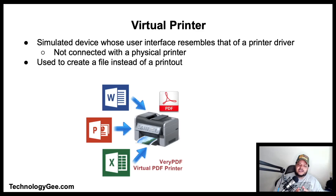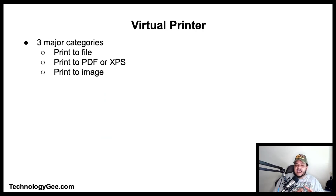A virtual printer is a simulated device whose user interface resembles that of a printer driver but is not connected to a physical printer; it is used to create a file instead of a printout. There are three major categories: print to file, used to create a file that can be copied to a specific printer for output; print to PDF or XPS (Microsoft XPS), used to save files that cannot be modified but still need to be easily shared and printed; and print to image, which converts documents directly into common bitmap graphic formats such as TIFF, JPEG, or BMP.